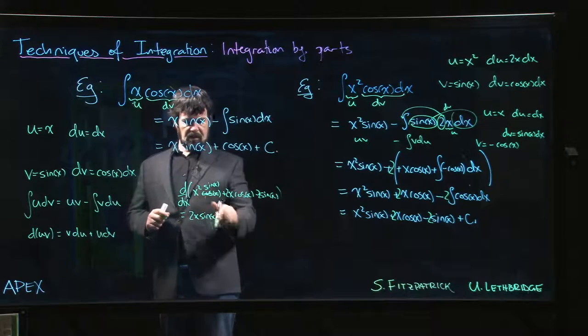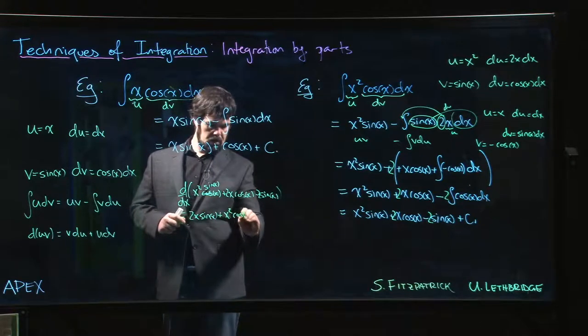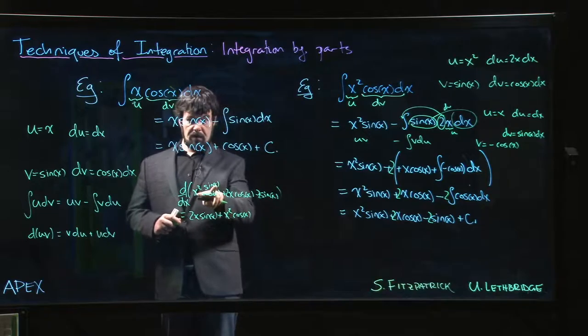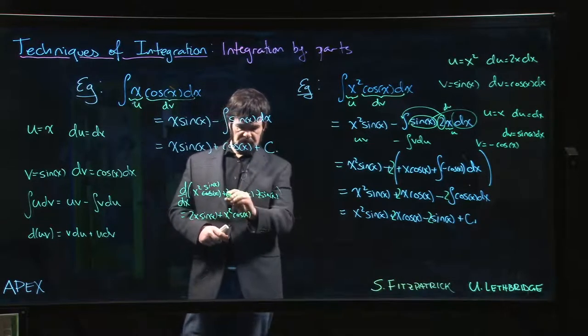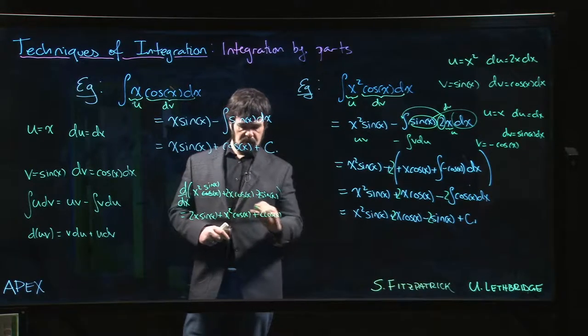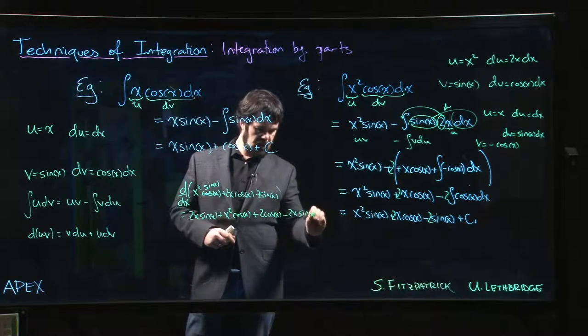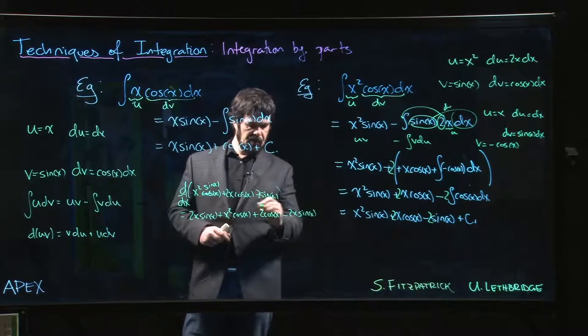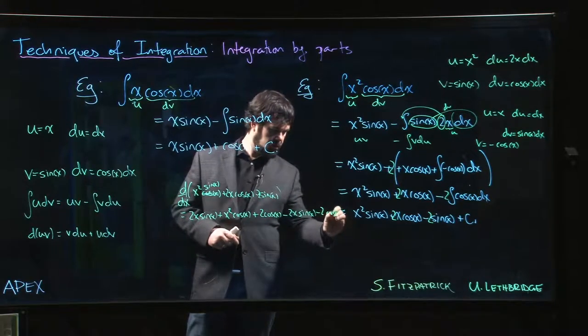So we get 2x sine x, and then we get x squared cos x. That's product rule derivative of the first term. Coming to the second, derivative of 2x cos x. The derivative of 2x is just 2, so I get 2 cos x. Derivative of cos is negative sine, so we get that. And then finally, the derivative of minus 2 sine x is minus 2 cos x.